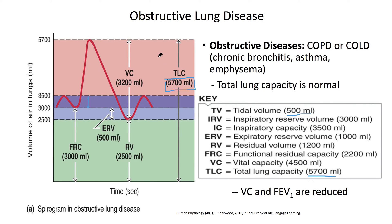Now let's focus on things that are different. You'll notice there are two numbers that change by 1,300. The first one is the vital capacity — the amount of air I can get in and out of my lungs when I inhale the hardest and then exhale the hardest. That number is 3,200 in the diseased lung, but normally it should be 4,500. The difference of 1,300 can be seen in the residual volume, which increases by 1,300 — from 1,200 to 2,500.